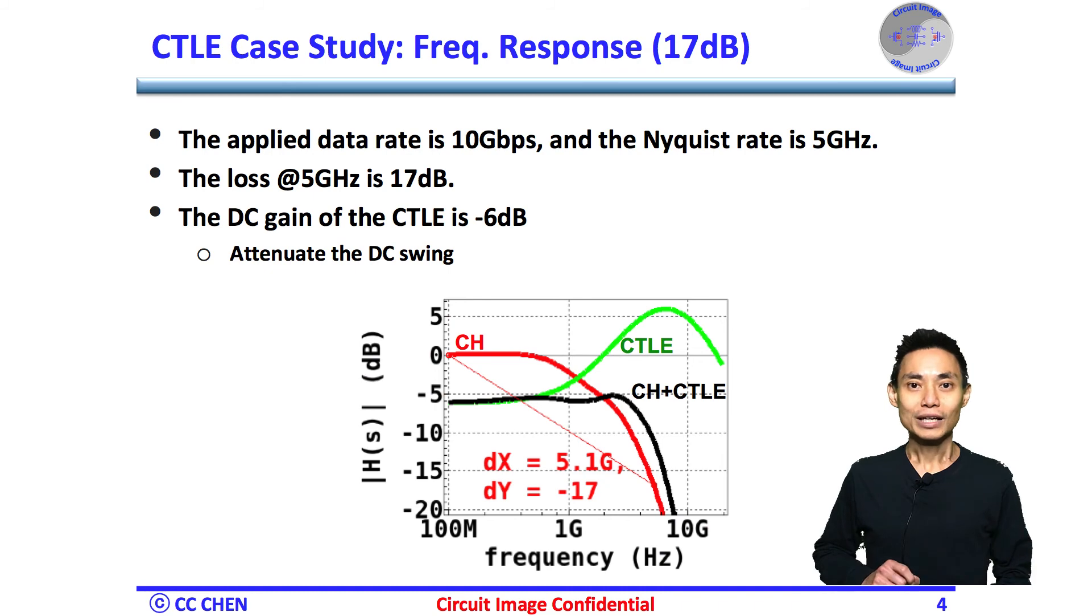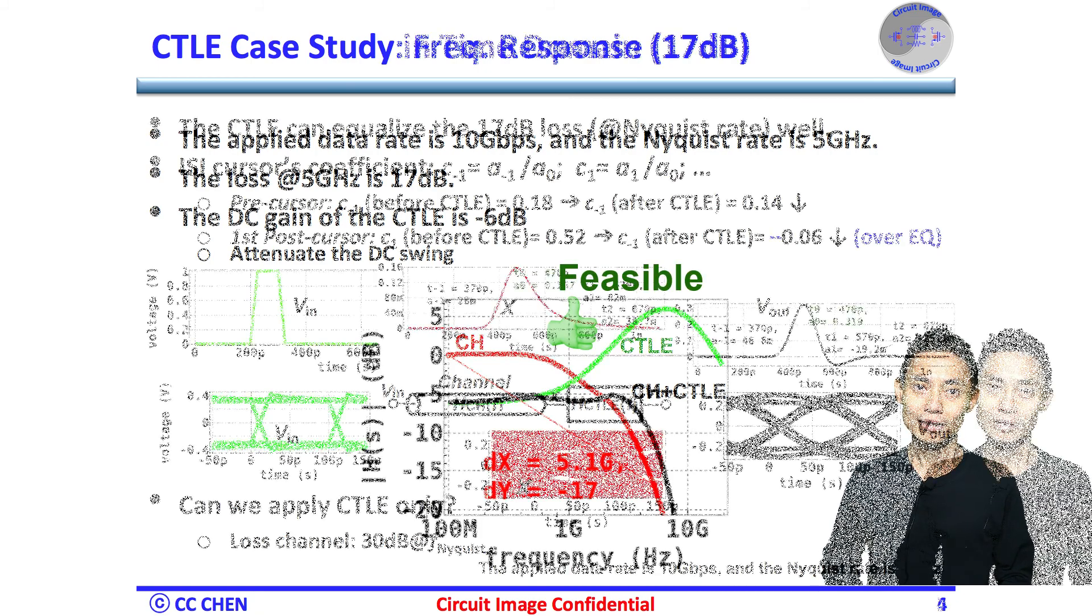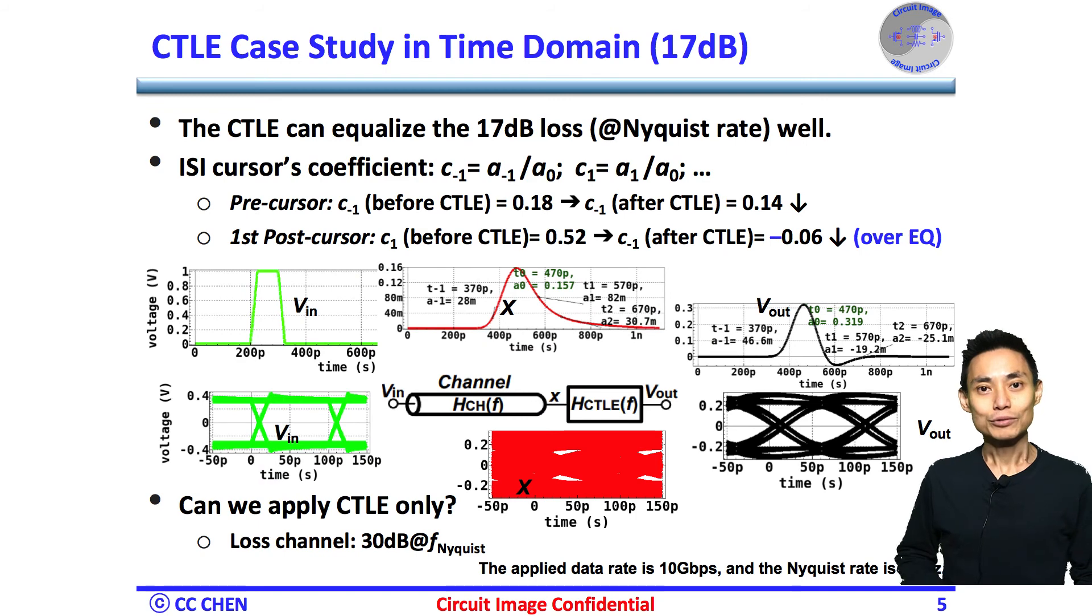Let's quickly review the case study of the 17 dB loss channel. If the CTLE equalizes the 17 dB loss or medium loss channel, that's feasible in the frequency domain. The frequency response, the time domain pulse response, and PRBS7 eye diagram demonstrate small residual pre- and post-cursors and open the eye diagram under sampler's input and CTLE's output at the 17 dB case study.